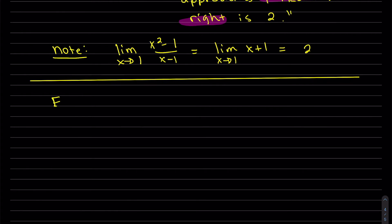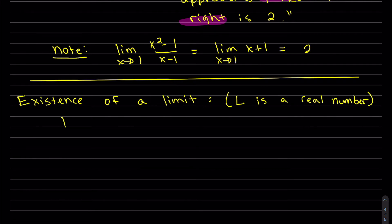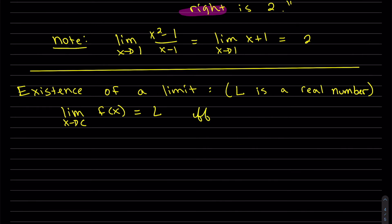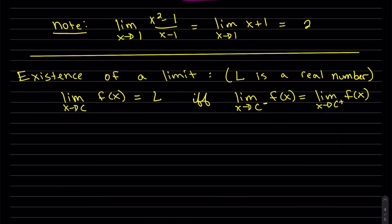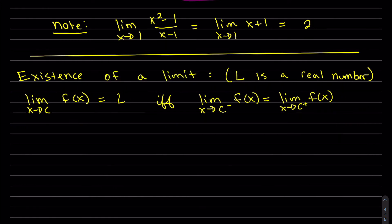Now let's talk about the existence of a limit. L is a real number. The limit as x approaches c of our function equals L if and only if the limit from the left equals the limit from the right, and both equal L.